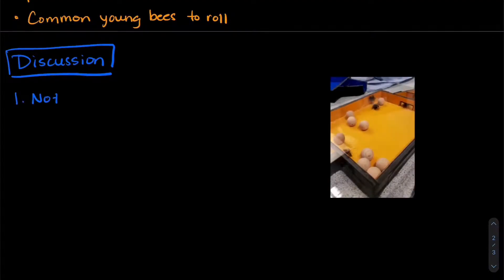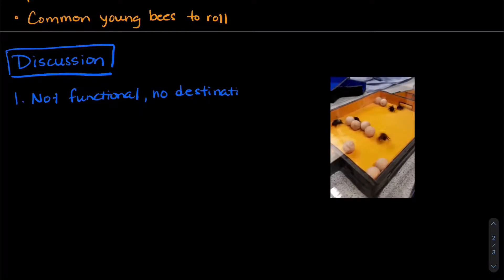So the first is that the rolling of these balls is not functional. The bees didn't seem to have a destination in mind. They didn't try and eat them or mate with them. So there's not actually a functional role of the behavior of playing with the balls.